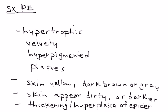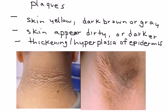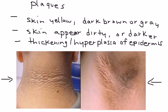Essentially what you have is a situation where there is thickening and hyperplasia of the epidermis. Here are a couple of pictures — this one involves the back of the neck, and this one is the axilla or armpit. As you can see, there is a very characteristic appearance to this type of skin disorder.